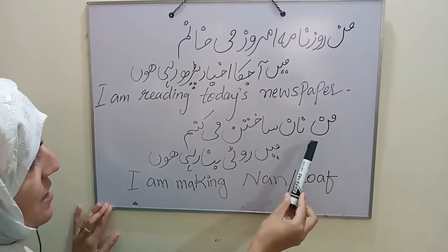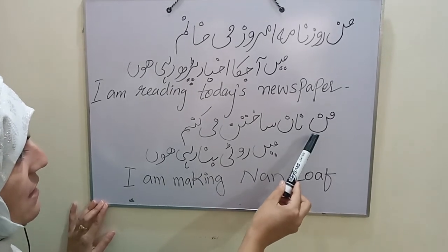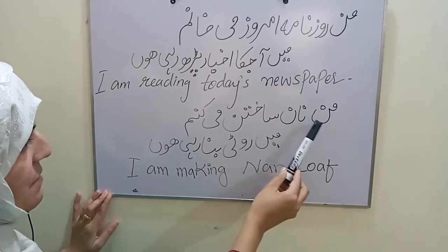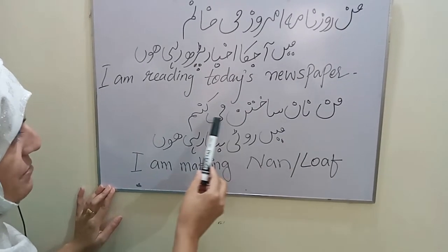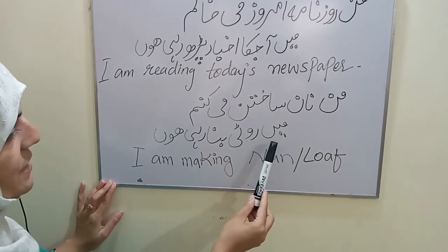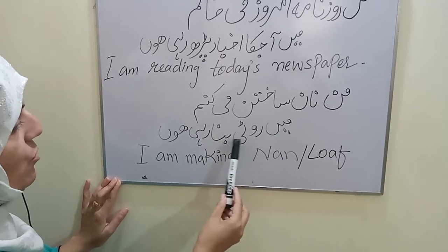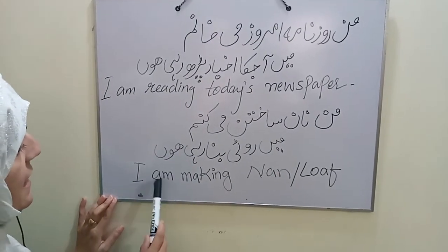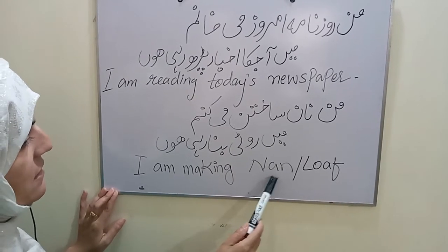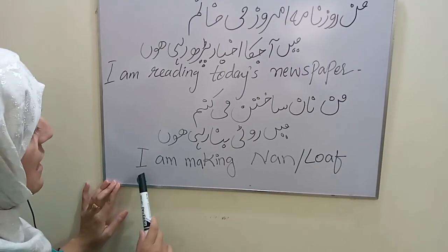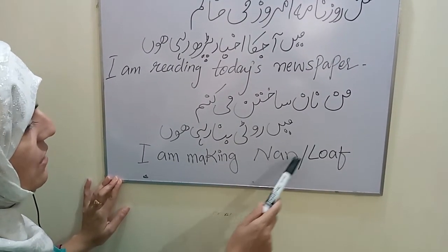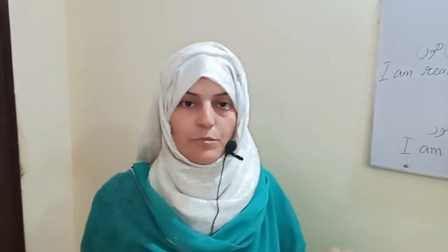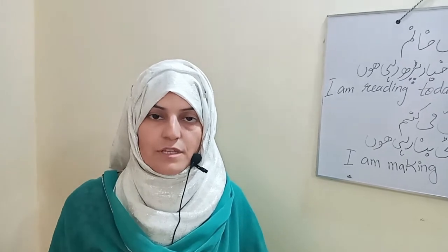Next we have a Farsi sentence: man nan sakhtan mi konam — in Urdu: main roti bana rahi hoon — and in English: I am making naan or loaf. As you know, for naan we can use 'loaf' or 'bread' and all that.